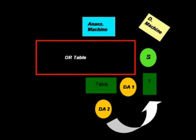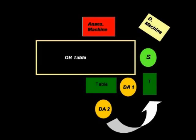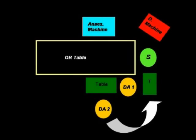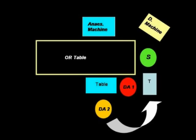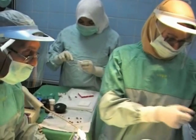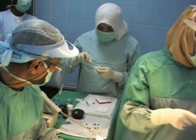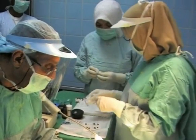In the initial positions, this is the location of the anesthesia machine, the location of the first dental assistant on the left side, and the position of the second dental assistant. The position of the surgeon is behind the head of the patient.